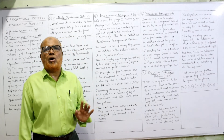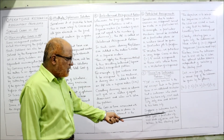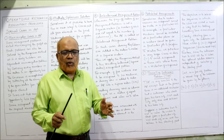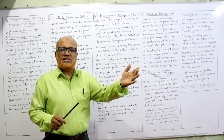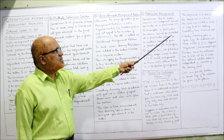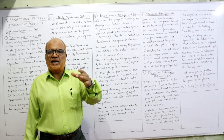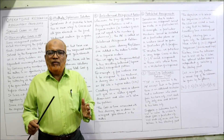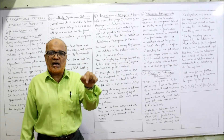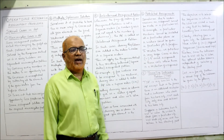Suppose a salesman has to visit N cities. He wishes to start from a particular city, visit each city once, and return to his starting point. The starting point may be any city; from that starting point he visits other cities only once and then comes back to his home city. The objective is to select the sequence in which the cities are visited such that total traveling time, cost, or distance is minimized. We need to find the minimum distance in which he can visit all cities and return home.